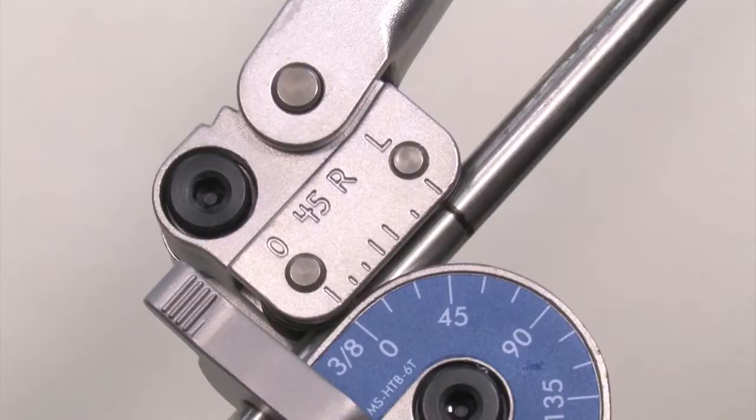Choose a bender that matches the outside diameter of the tube that you are working with. This bender is for 3/8 inch OD tubing.